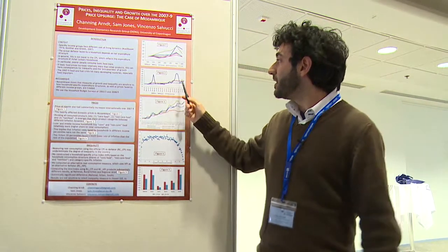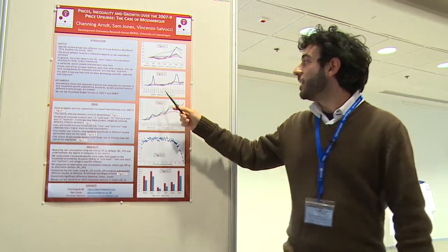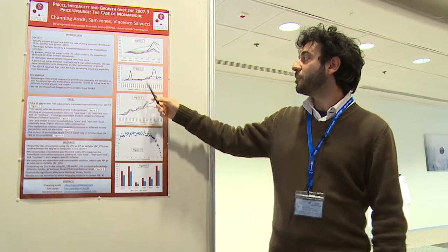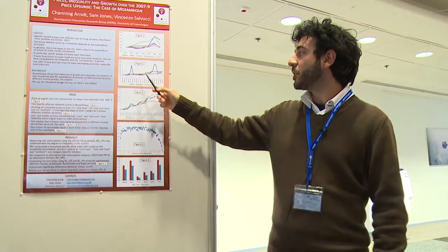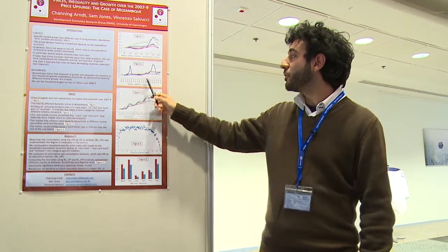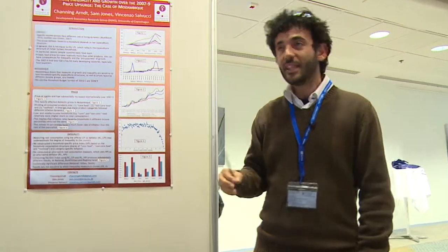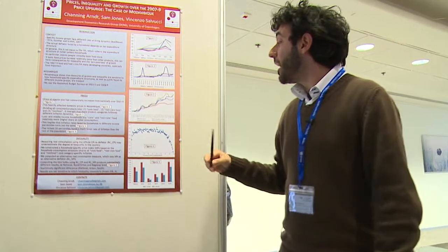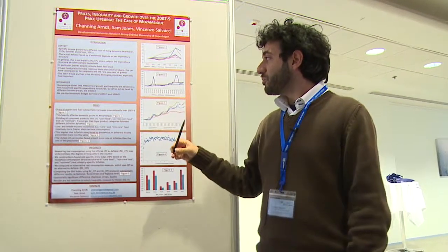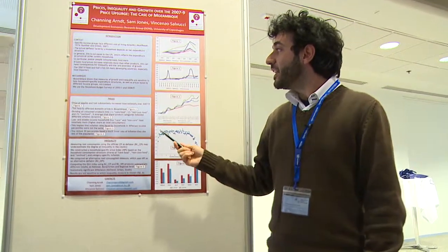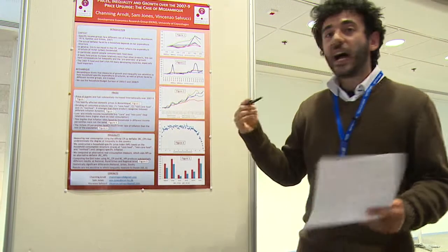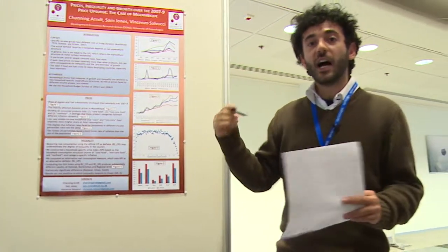We can see from this figure that starting from 2007, the price of wheat, maize, and rice went up a lot in Mozambique. We then decided to understand better how this price dynamics affected inequality and inequality measures.